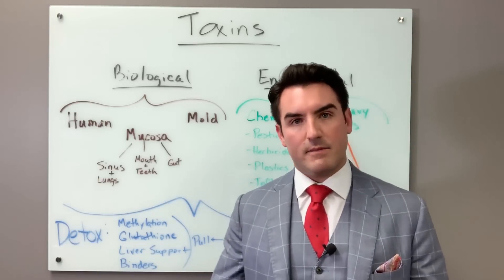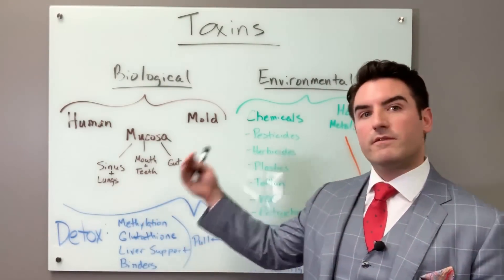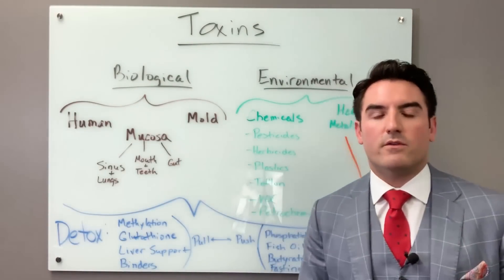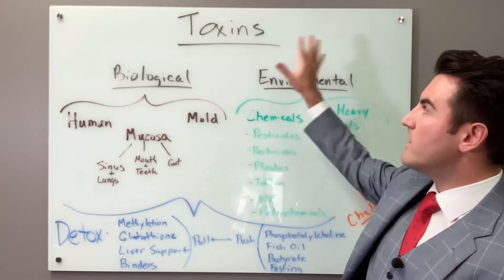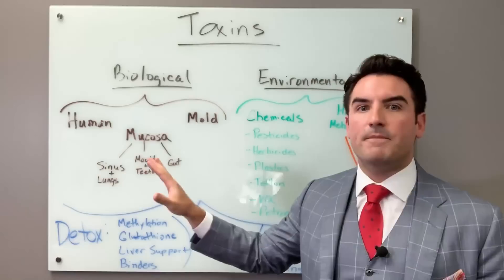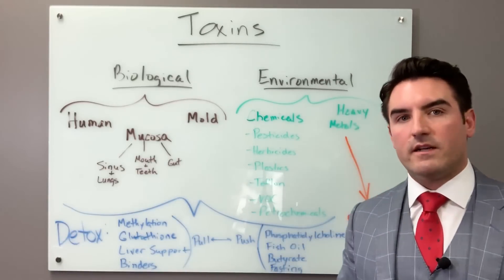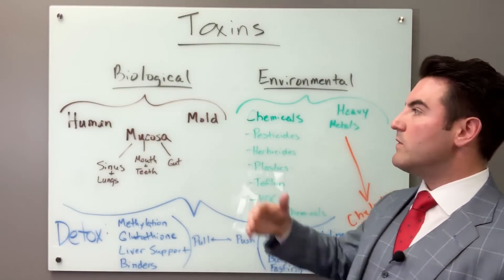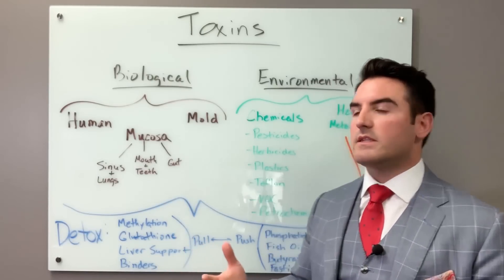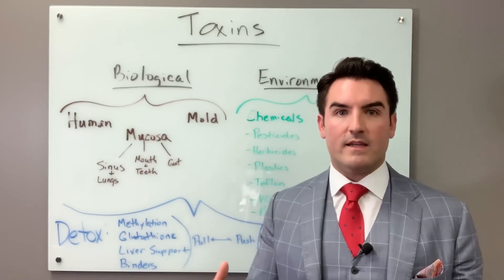Our own body makes toxins that must be gotten rid of, and our body uses the same detoxification processes to eliminate our own toxins that it uses to get rid of Monsanto's chemicals, Roundup, herbicides, pesticides, and all those things. Today I'll go through what a toxin is, the different categories both biological and environmental, and how these things are gotten rid of. This will be a basic cursory overview, and future videos will go into more detail. Think of this as the 10,000 foot overview.